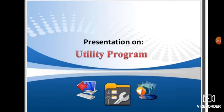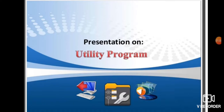In my previous topic I discussed software and its types. Software is the set of programs which makes our hardware work. We discussed two types: application software for specific activities, and system software necessary for computer functioning. Besides these two, we have another class known as utility software or utility programs.